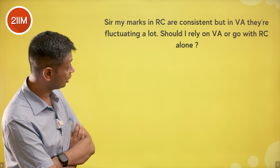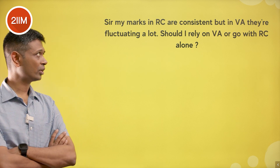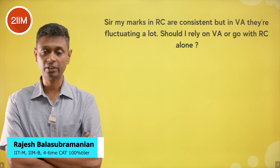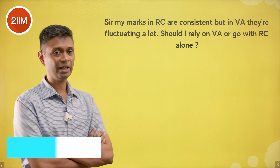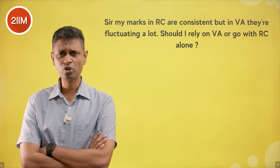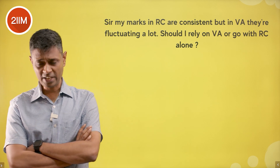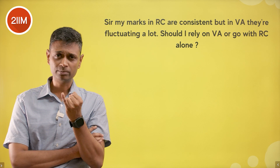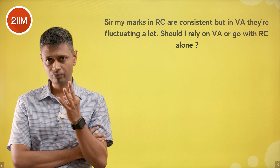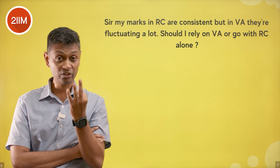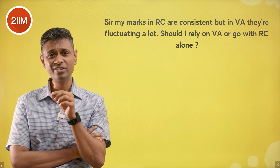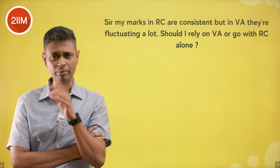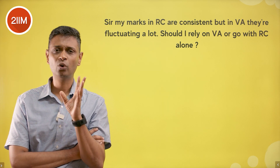My marks in RCA are consistent but in VA they are fluctuating a lot — should I rely on VA or go with RCA? Of the two, RCA is the heavier part and you're able to be consistent with that, so brilliant — focus more on RCA. For VA, the three main categories are sentence rearrangement, para jumble, sentence elimination, and para summary. There's every chance that of these three, you have a decent strength in one — it could be elimination, rearrangement, or para summary.